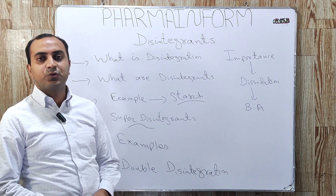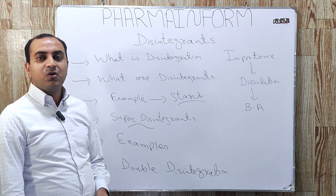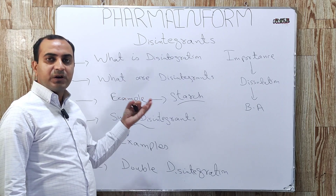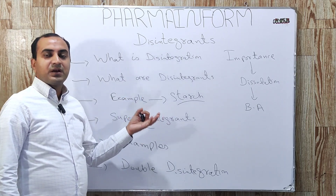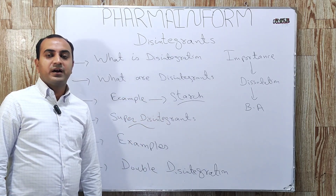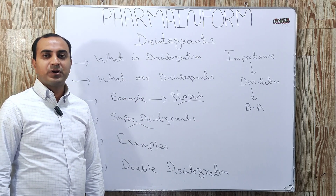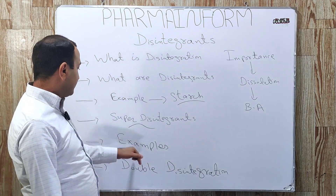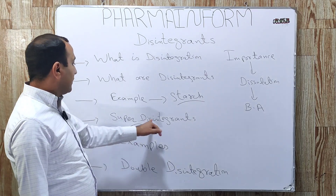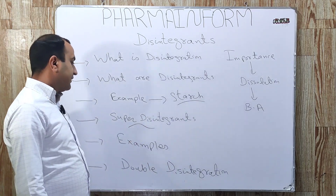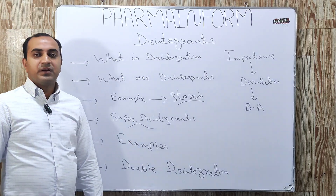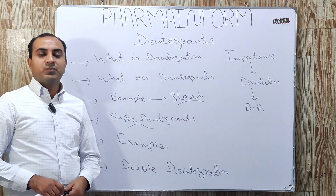Examples of super disintegrants include croscarmellose sodium and sodium starch glycolate. These are among the most important examples of super disintegrants.